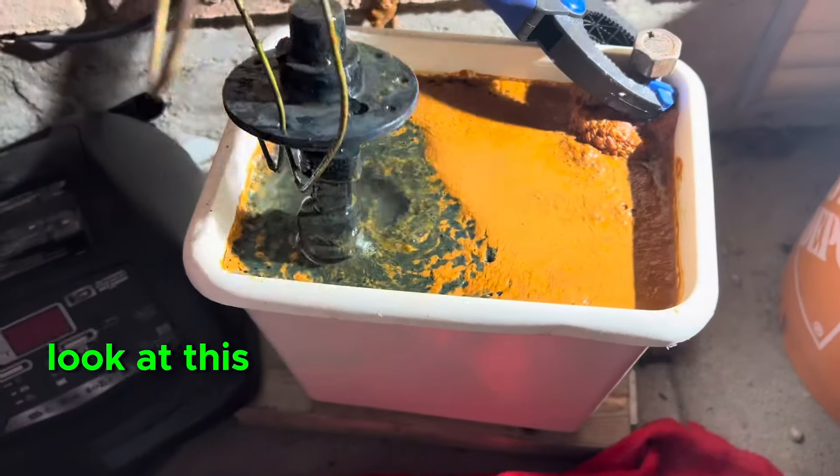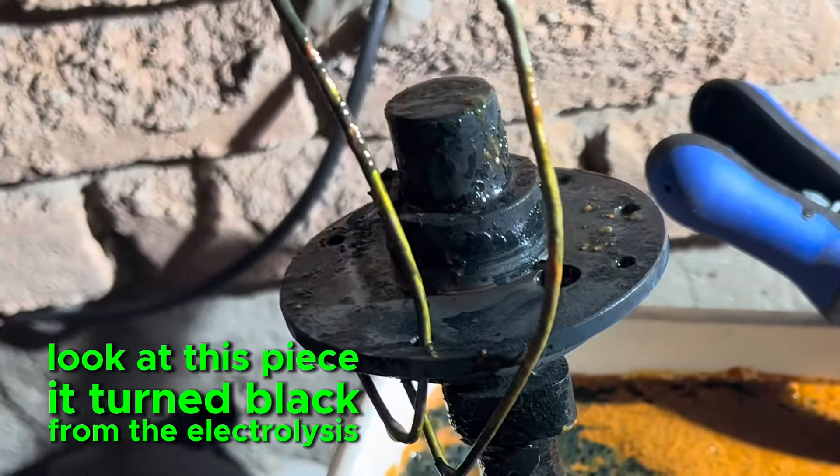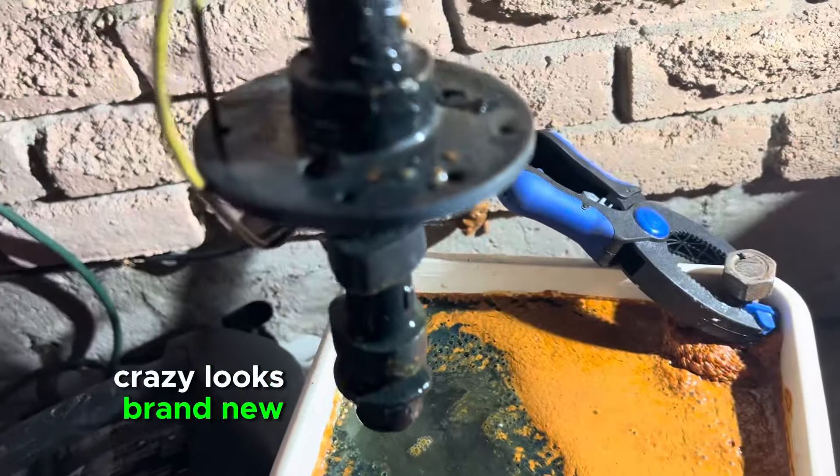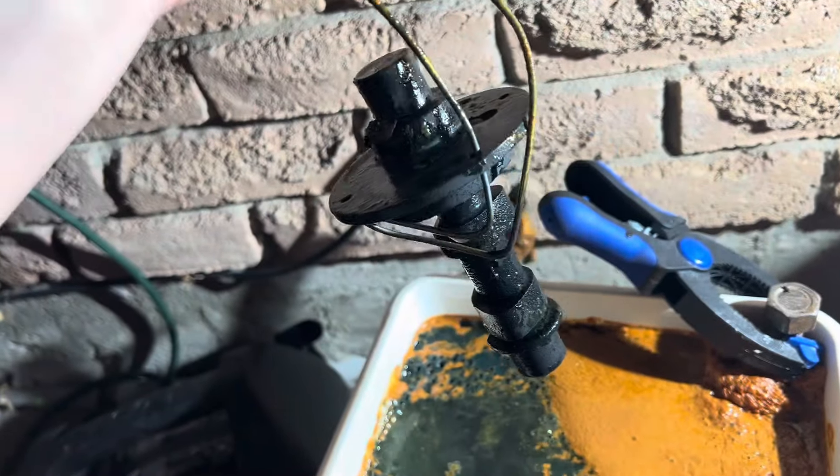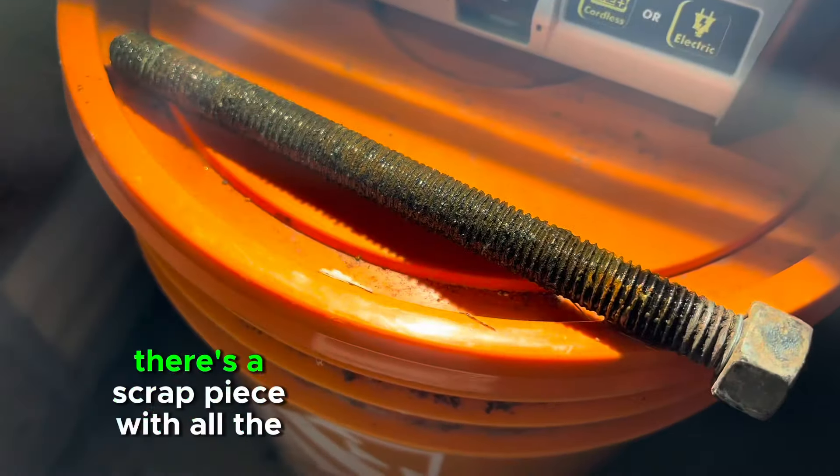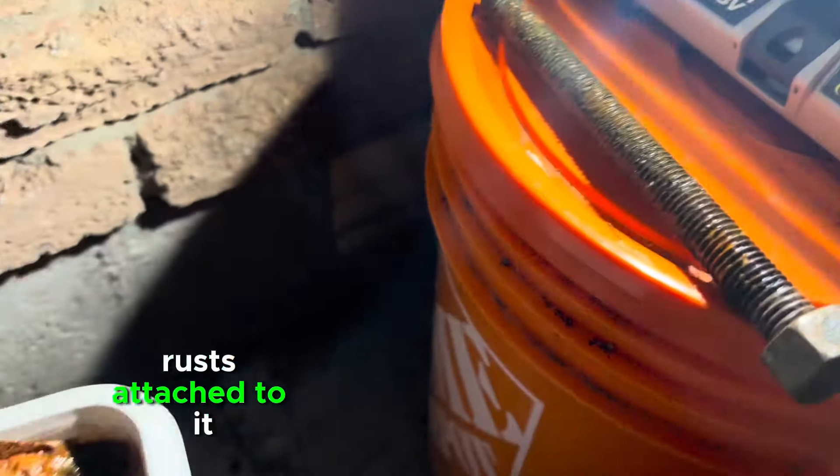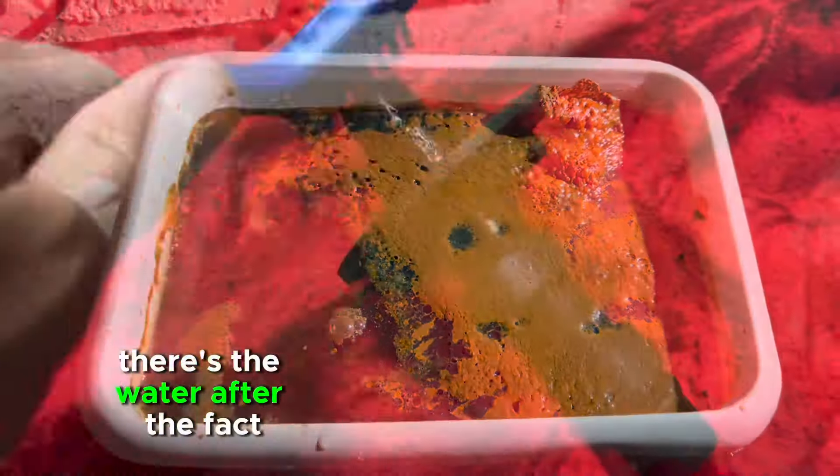Look at this piece, it turned black from the electrolysis. Crazy. Looks brand new. So there you have it. There's the scrap piece with all the rust attached to it. There's the water after the fact.